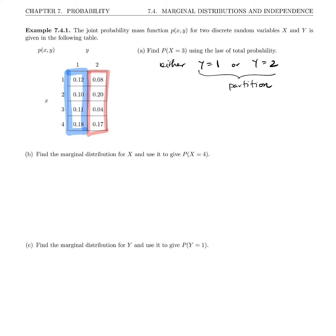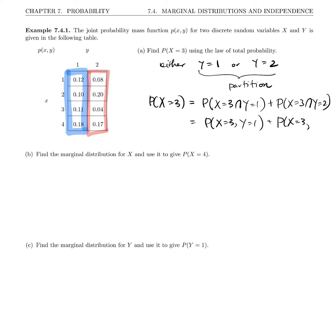Those are all of the possibilities for y — exclusive and exhaustive. So the probability that x equals 3, using the law of total probability, is the probability that x equals 3 and y equals 1, plus the probability that x equals 3 and y equals 2. In PMF notation, that's p of (3,1) plus p of (3,2). p of (3,1) is 0.11, plus p of (3,2) which is 0.04, giving a probability of 0.15.